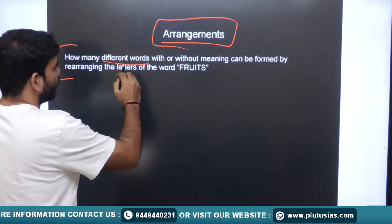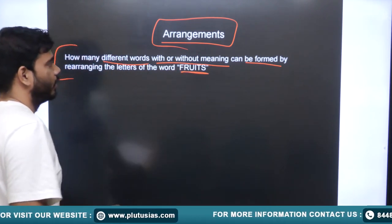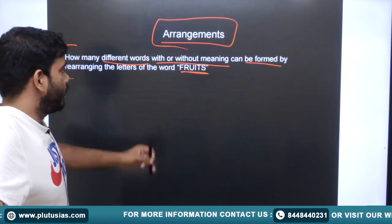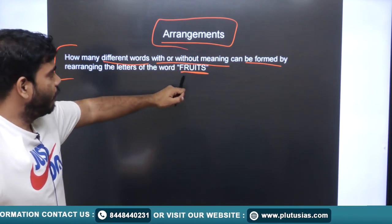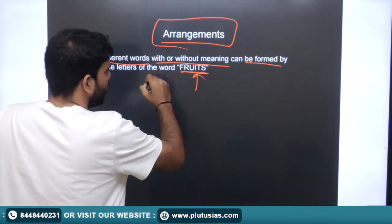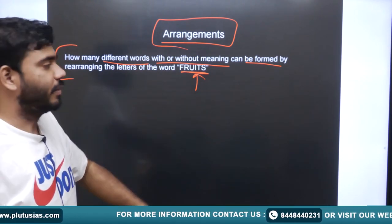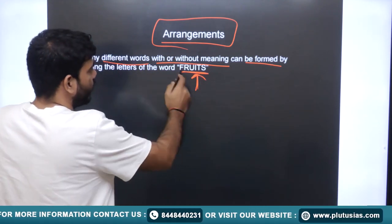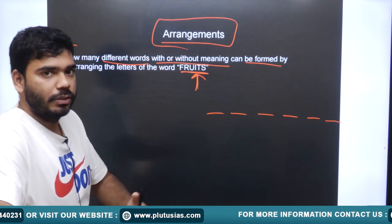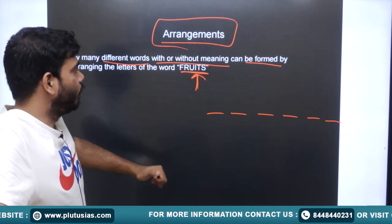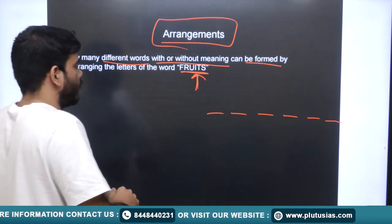The first example: how many different words, with or without meaning, can be formed by rearranging the letters of the word FRUITS? This word has six alphabets and all of them are unique — no alphabet is repeating. We have to rearrange these six alphabets to form words of six letters, with or without meaning, and find how many such words can be formed.